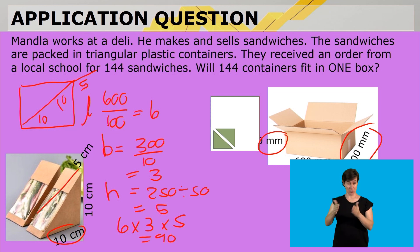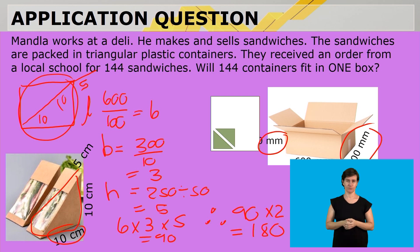So we can pack 6 times 3 times 5 is 90, so it's 90 of the one box, and we can actually pack 2, so therefore, in a box, we can fit 90 times 2, and that is 180 little containers in one box.